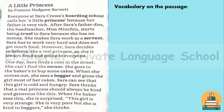The passage is a story for kids called 'A Little Princess,' written by Frances Hodgson Burnett. Everyone at Sara Cruz's boarding school calls her 'a little princess' because her father is very rich. After Sara's father dies, the head teacher Miss Minchin starts being cruel to Sara because she has no money. She makes Sara work as a servant, so Sara has to work very hard and doesn't get much food.